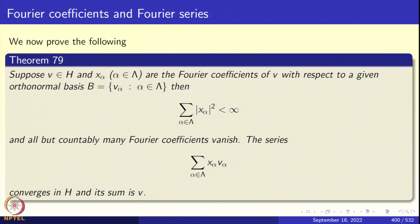Now we come to Hilbert spaces and prove the following theorem. Suppose we have a Hilbert space H, an element V in H, and x_α are the Fourier coefficients of V with respect to an orthonormal basis B. Then Σ |x_α|² over α ∈ Λ is finite. As a consequence, all but countably many of the x_α must vanish, so the series Σ x_α v_α is effectively a series with countably many terms. This series converges in H and the sum is exactly V.